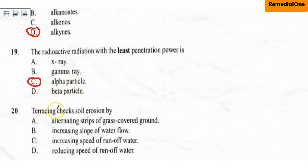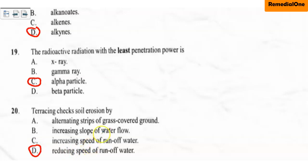Question twenty: terracing checks soil erosion by A. alternating strips of grass-covered ground, B. increasing the slope of water flow, C. increasing speed of runoff water, D. reducing speed of runoff water. The correct option is D — reducing speed of runoff water. Anytime you terrace, you are creating channels that reduce the speed of runoff water.